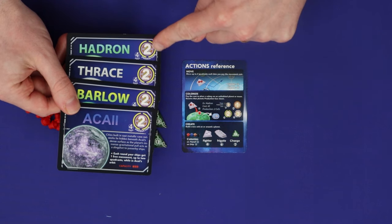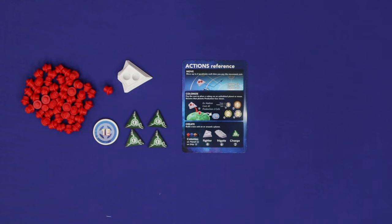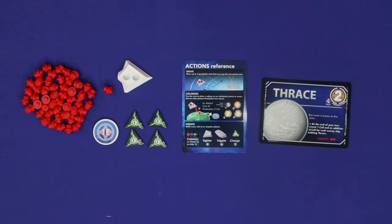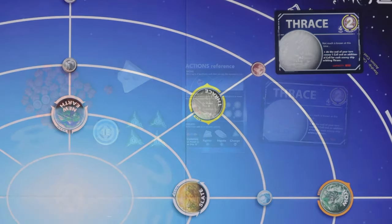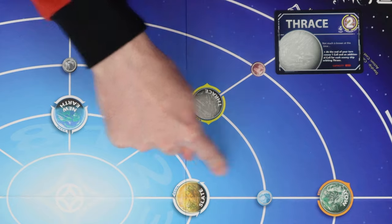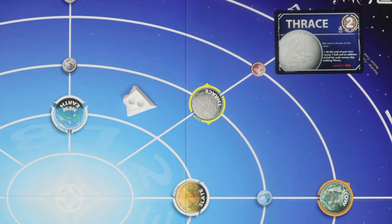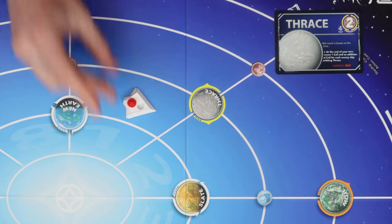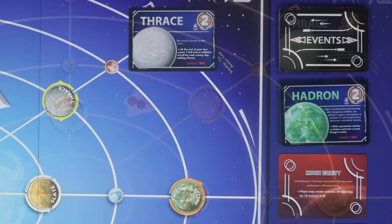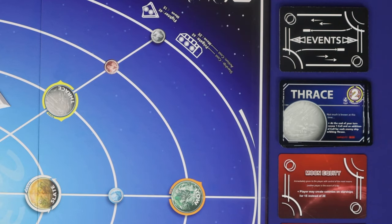Then shuffle up the four planet cards showing the number 2 in the top right corner and deal one at random to each player. This represents your starting location on the board. Each player now places their starting fighter into one of the four quadrants that is surrounding their starting planet and places two colonies into the fighter. All starting planet cards are returned to the planet deck. Choose a starting player and you're ready to play.